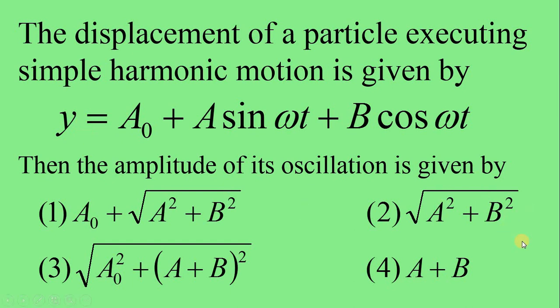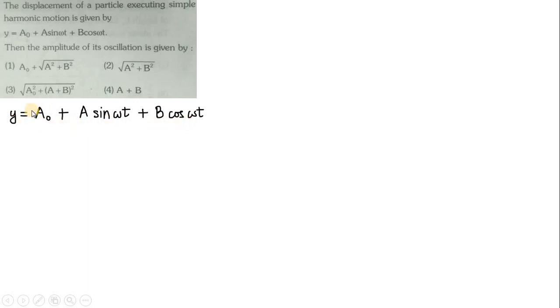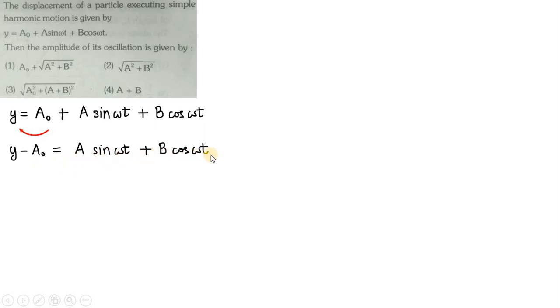Let us solve this question now. Our equation is given as y = a₀ + a·sin(ωt) + b·cos(ωt). First of all, we will transpose the constant a₀ to the left side. Then we get: y − a₀ = a·sin(ωt) + b·cos(ωt).